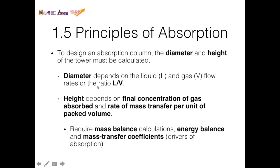Next, we look at the principles of absorption. To design an absorption column, the diameter and height of the tower must be calculated. As we saw in the previous example, to calculate the diameter we need to determine the liquid-gas ratio first, written as L over V, which is also the same as L over G.